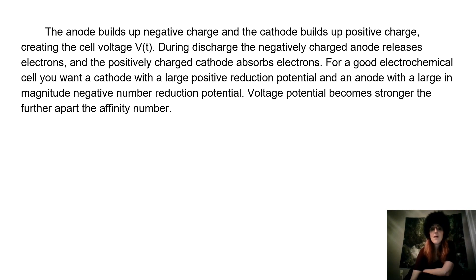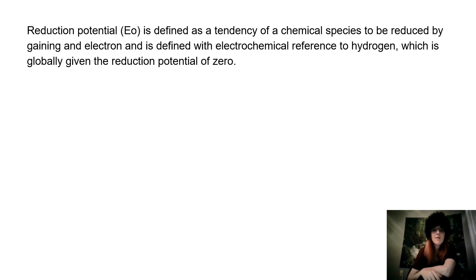For a good electrochemical cell, you want a cathode with a large positive reduction potential and an anode with a large in magnitude negative number reduction potential. Voltage potential becomes stronger the further apart the affinity number. Reduction potential is defined as the tendency of a chemical species to be reduced by gaining an electron, and is defined with electrochemical reference to hydrogen, which is globally given the reduction potential of zero.